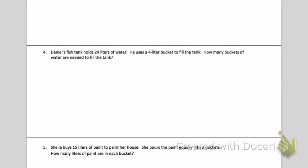Daniel's fish tank holds 24 liters of water. He uses a four-liter bucket to fill the tank. How many buckets of water are needed to fill the tank? So let's look at some important information. He has 24 liters. He uses a four-liter bucket. We want to know how many buckets fill the tank. So let's think for a minute. I have 24 total liters. So here is my tape diagram showing 24 liters.